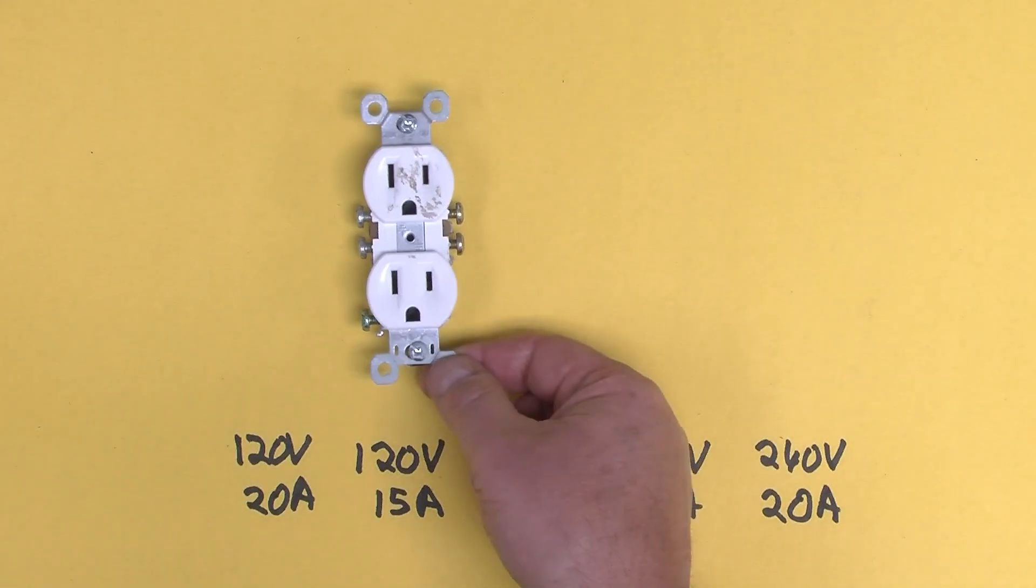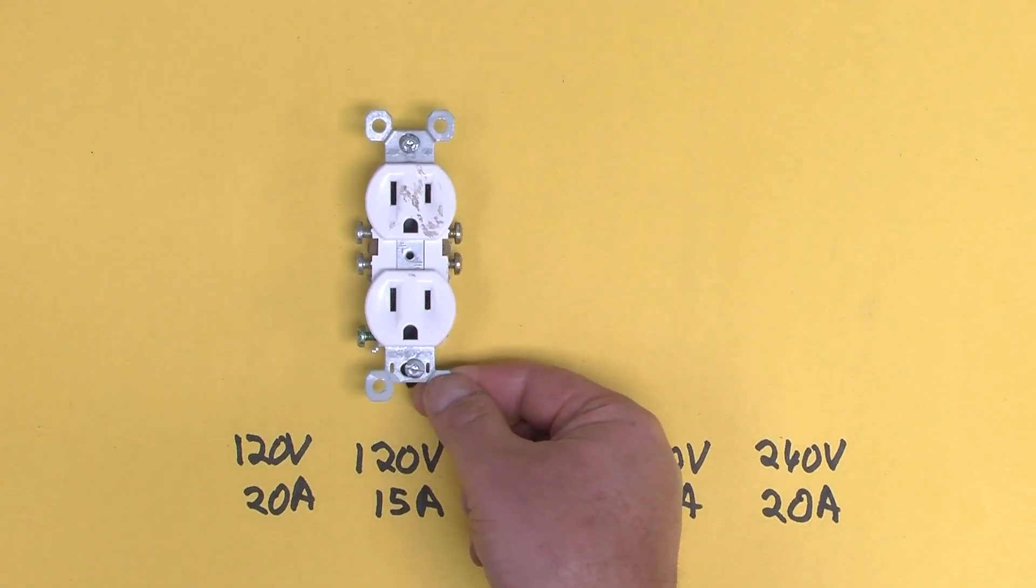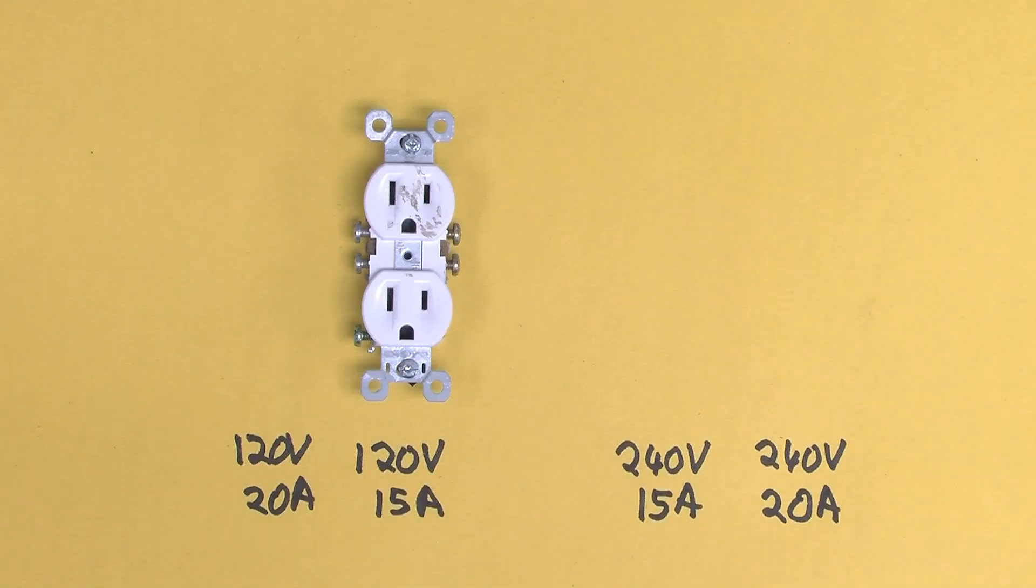To put things in perspective, this is the standard North American 120 volt 15 amp receptacle that you find in every house. In fact, you might be surprised to know that we do have other receptacles.